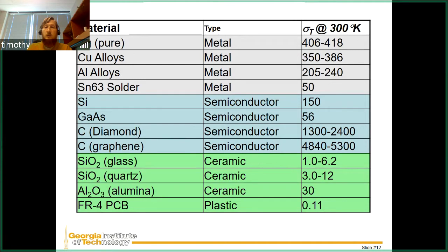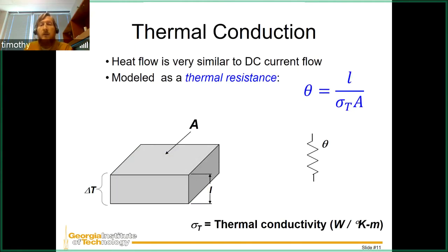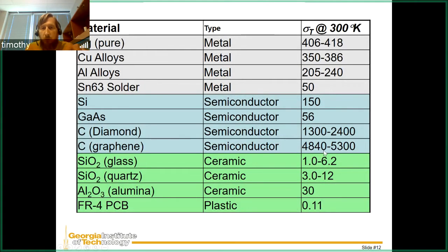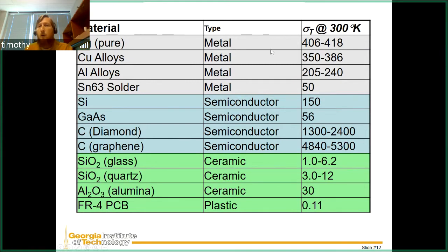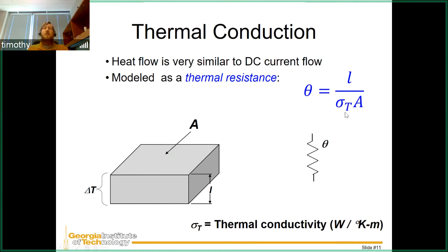Here are different materials and their thermal conductivity values, which feed into the thermal resistance equation. They vary widely — glass sits at 1 to 6.2, while gold, silver, and copper alloys are up at 406. Putting 406 into the thermal conductivity equation results in a much smaller thermal resistance number.